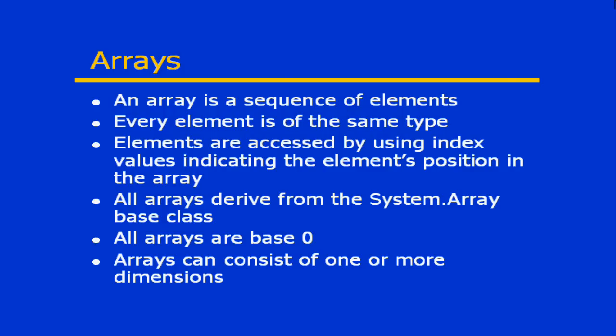An array can consist of one or more dimensions. A dimension — just think of that as a plane within the array structure. A one-dimensional array is simply a list of values. A two-dimensional array — think of it like a table, with a column and row-based plane used to find intersection points of each of those dimensions. You can have two, three, four dimensions, however many you need to track the elements contained within the array.